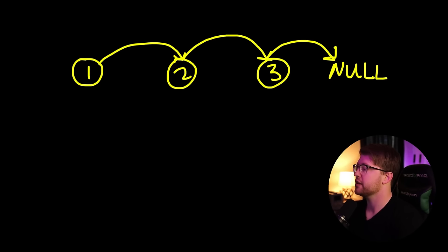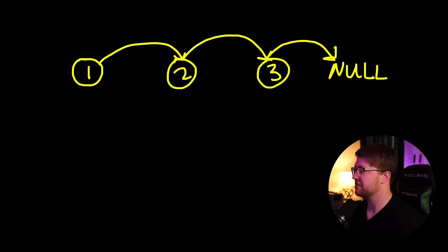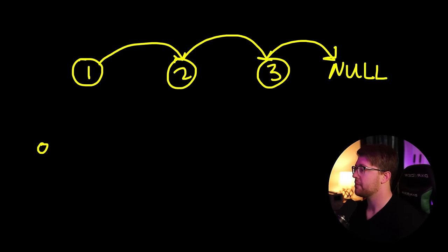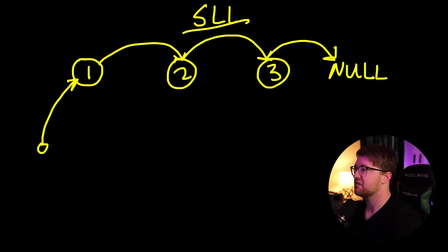Typically in a singly linked list, or really any linked list, you have what's called the list head. This is a statically defined area in global memory that is not in the heap, and it points to the beginning of the list. This is our singly linked list, or we'll call it our SLL.